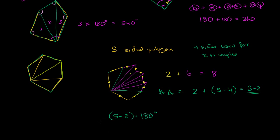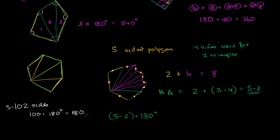Which is a pretty cool result. So if someone told you that they had a 102-sided polygon, s is equal to 102 sides. The sum of the interior angles is going to be 102 minus 2, so 100 times 180 degrees, which is equal to 18,000 degrees for the interior angles of a 102-sided polygon.